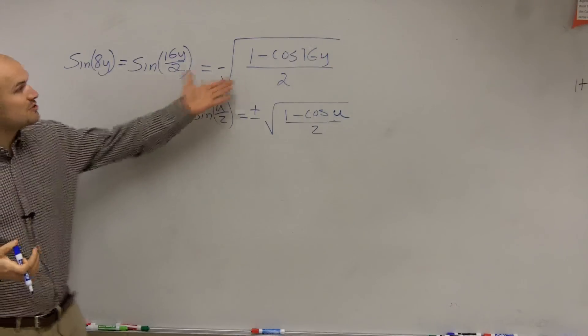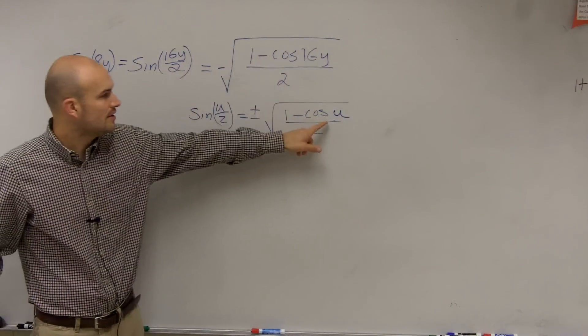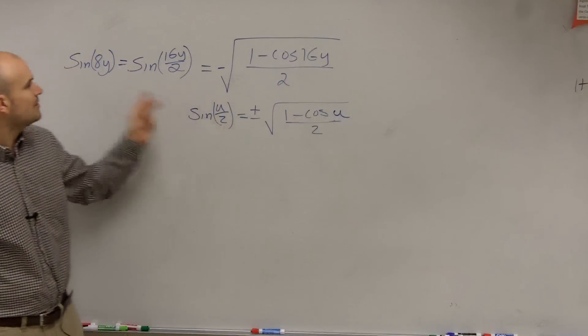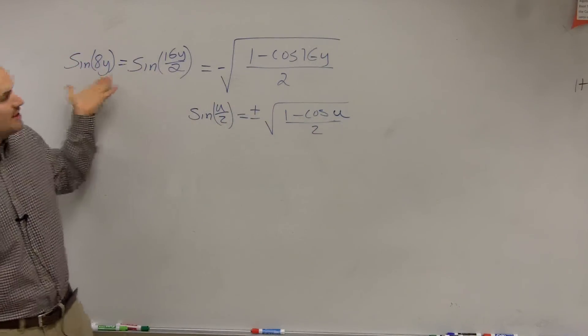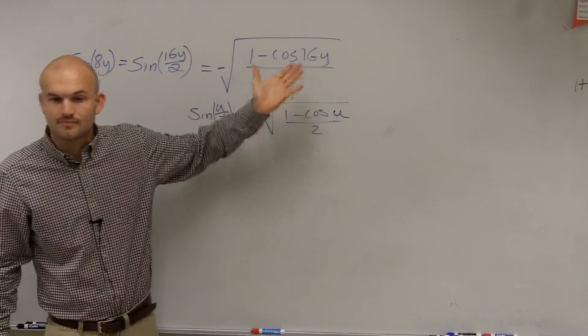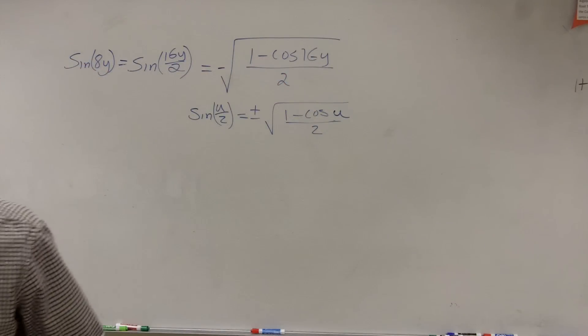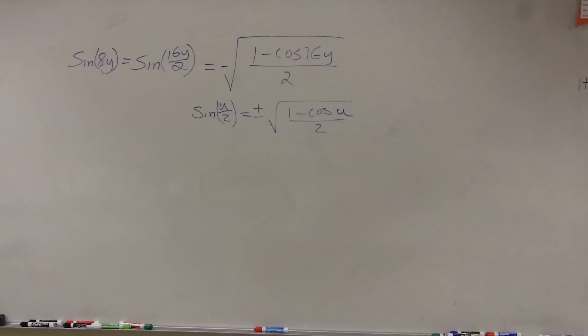So the simplified version of this is using our sine formula. You could say, oh, it looks just like this, but then really what that is is sine of 8y. Because if I was going to use the half angle formula for this, I would get that expression. So that's all you really had to do - just determine what the formula was.